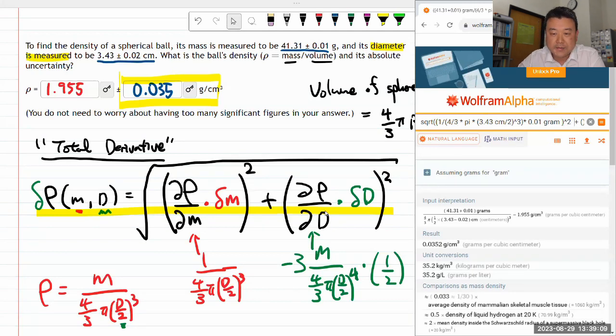Now this second term: I need to put in -3 times the mass, 41.31 grams, divided by 4/3 times π times d, which is 3.43 cm, divided by 2, to the fourth power. Before that I need to multiply by one-half. That's the whole derivative expression.